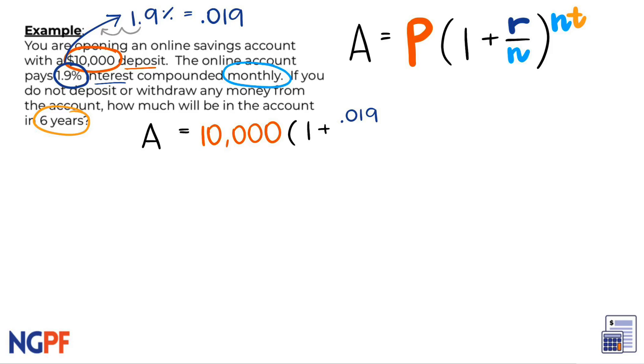Next we have N, which represents how often we are compounding per year. Since the account compounds monthly, we know that it will then compound 12 times per year. Finally, for the exponent, we need N once more, which we know is 12. Then we will multiply by T, which from the end of the word problem is 6 years.